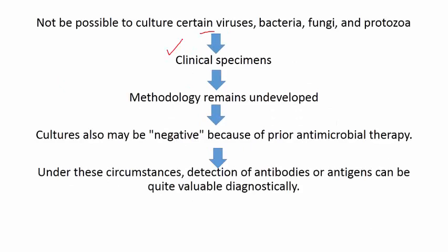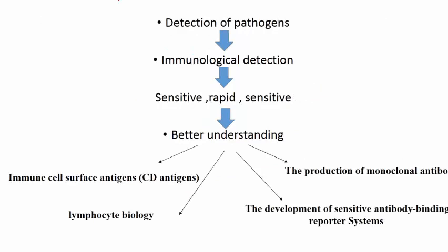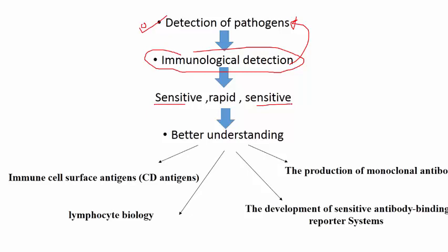In those conditions, there should be certain other ways to detect the causative agent of the disease. That is done by detecting the antibodies which are generated against those causative agents, and we can diagnose it. Instead of detecting pathogens through cultural and morphological identification, we should go with immunological detection to identify the pathogen. Immunological detection methods are sensitive, very rapid, and very reliable.